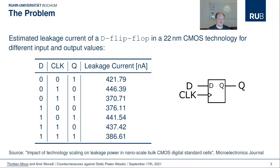Here is another example in the same technology node but for a D-type flip-flop. Interestingly, the leakage current of the flip-flop does not only depend on the input D and the clock, but also on the output value Q, which can be independent of the current value of D. Typically, the registers are not the main drivers of the information leakage, but it is important to remember this output dependency for the countermeasures explained later.